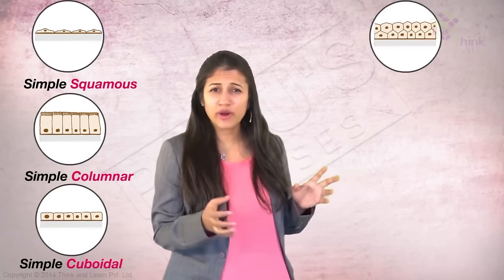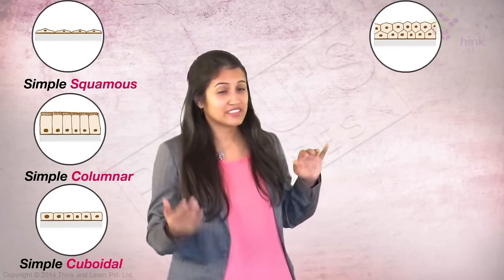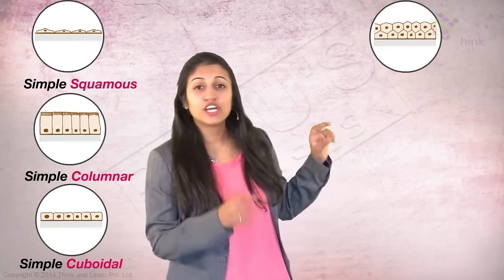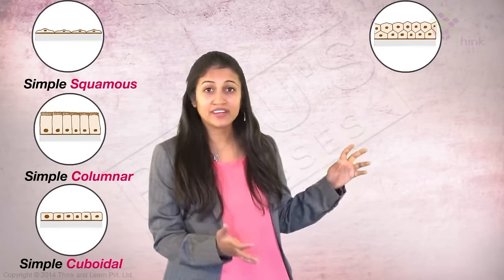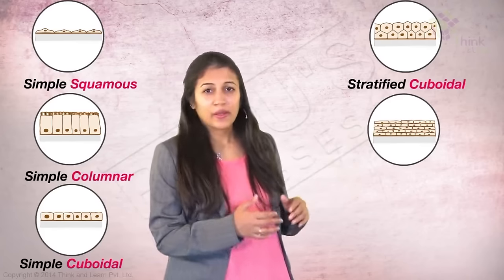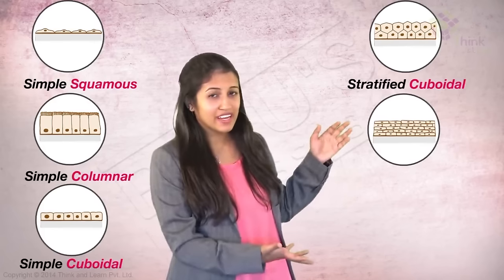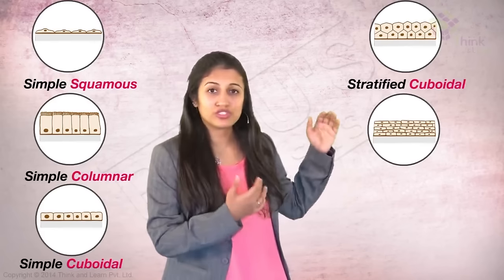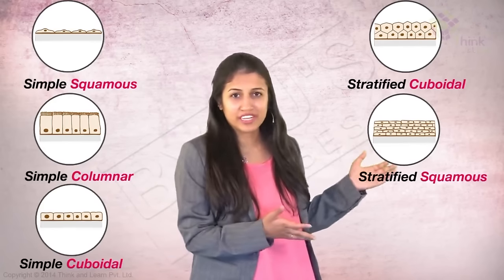What about this one? There's more than one layer, so it's stratified. What is the type of cells? Cuboidal. So, stratified cuboidal cells. Next, what about this? This one is also simple. Many layers, so stratified. And type of cells? Squamous. So, stratified squamous.